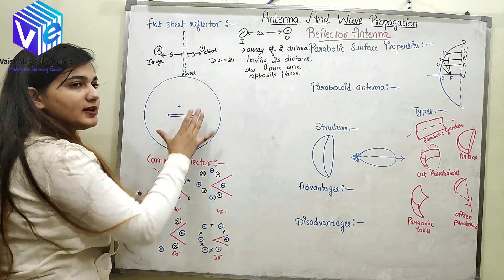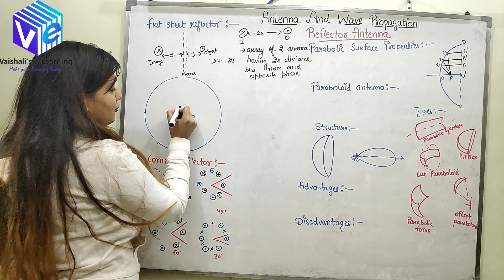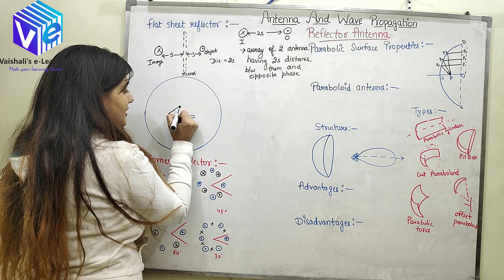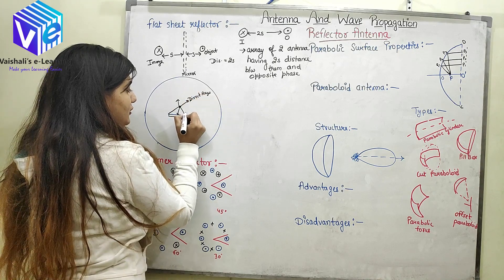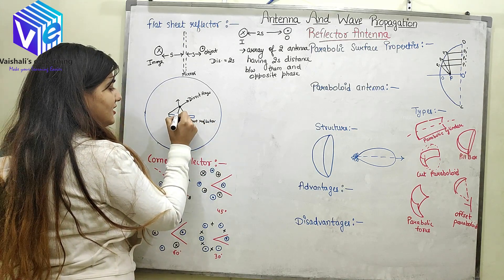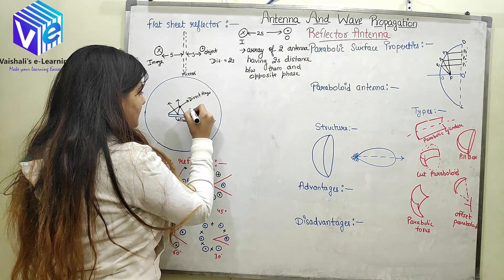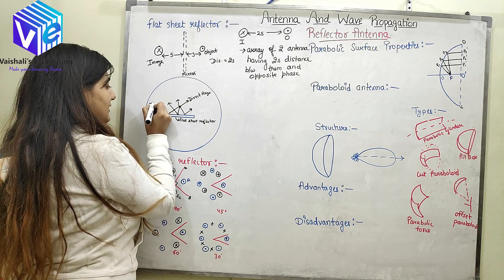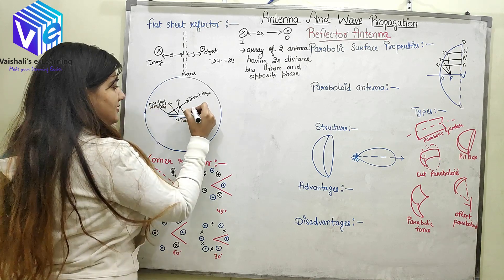Considering the flat sheet reflector with the object antenna: the object antenna radiates in multiple directions — these are called direct rays. After reaching the flat sheet reflector, the radiations travel back and reflect. The maximum limit of the reflected waves defines the boundary of reflected rays.